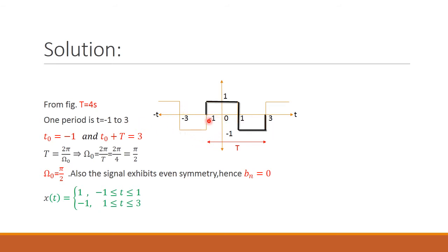We can choose any period. For this example, the period is chosen from minus 1 to 3. We need to assign values: t₀ = minus 1 (the lower limit) and t₀ + T = 3 (the upper limit).